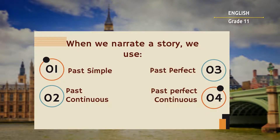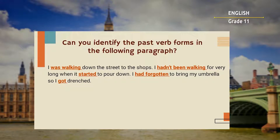We use these tenses to describe events that happened in the past and for telling stories. Now, let's see the following paragraph and think to yourself whether you can identify the verb forms in the paragraph. I was walking down the street to the shops. I hadn't been walking for very long when it started to pour down. I had forgotten to bring my umbrella, so I got drenched.